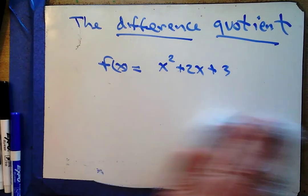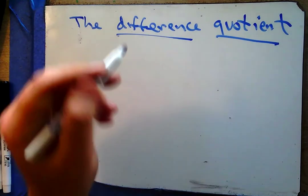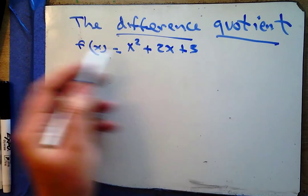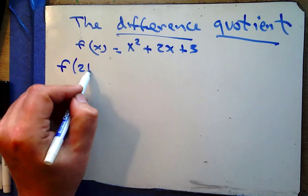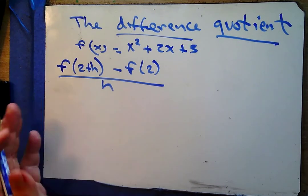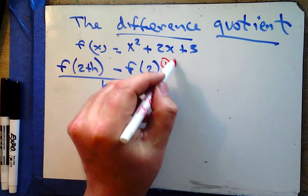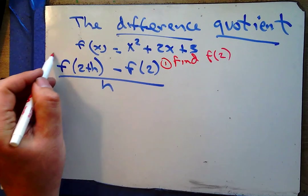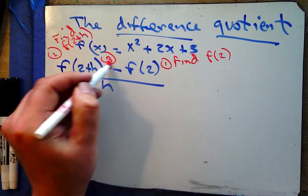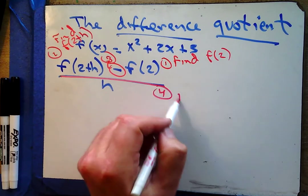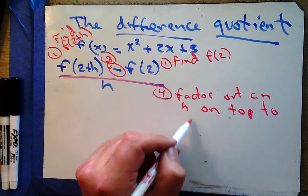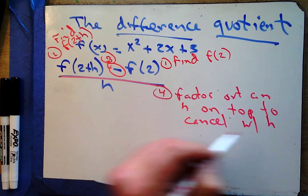The interesting thing about the difference quotient is that it comes in a number of different forms. Here's our next difference quotient. I'm going to find f(2), find f(2+h), subtract them, and then factor out an h on top to cancel with the h on the bottom.